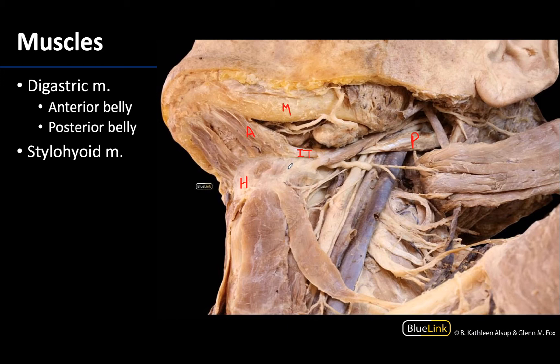The anterior belly is innervated by the nerve to mylohyoid, which is a branch of V3, whereas the posterior belly is going to be innervated by the facial nerve. That's something we love to talk about anytime you have something unique like that, or two separate innervations, or an innervation that's different from the rest of the surrounding muscles — that's something you'll often hear us talk about.